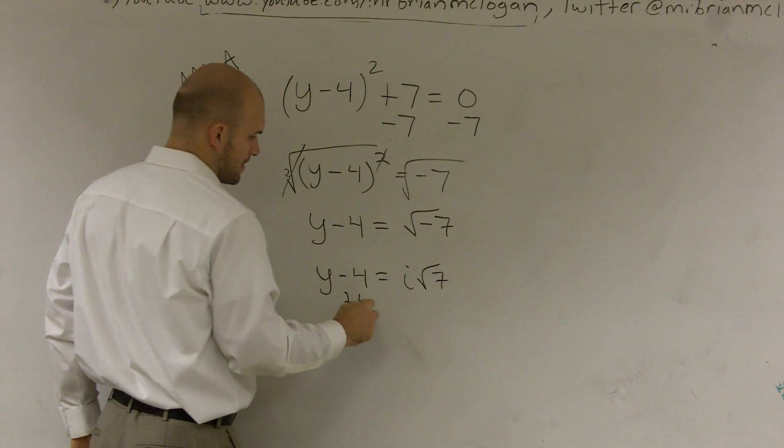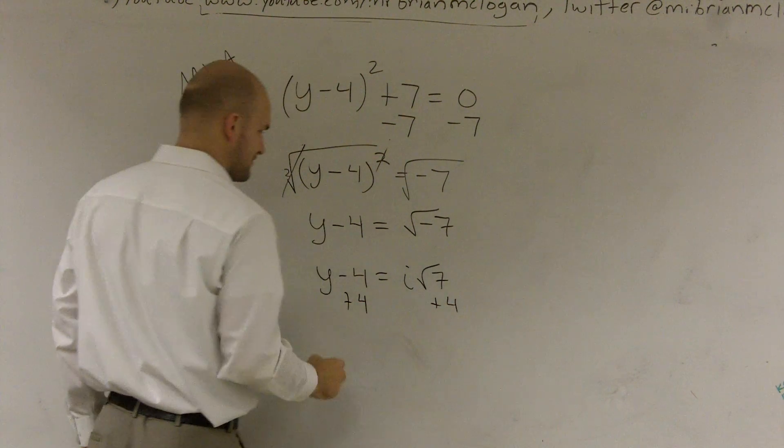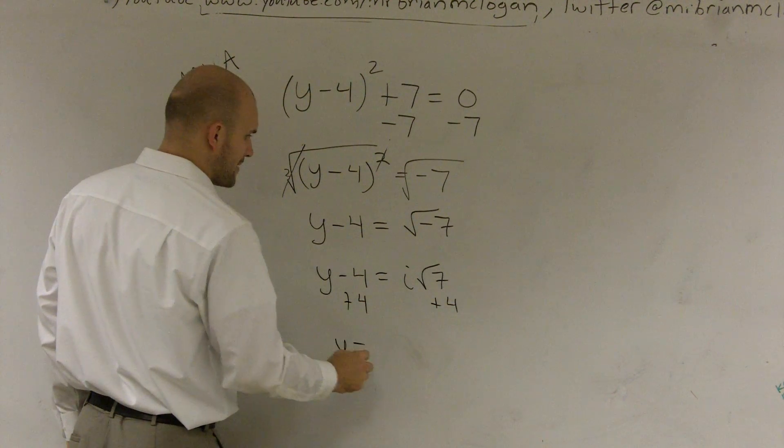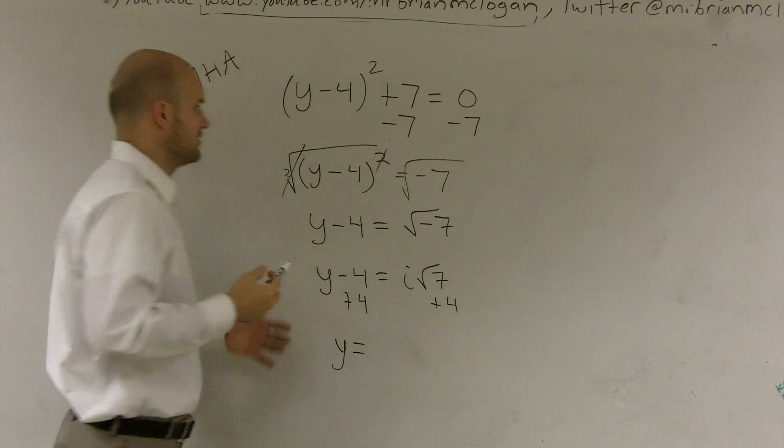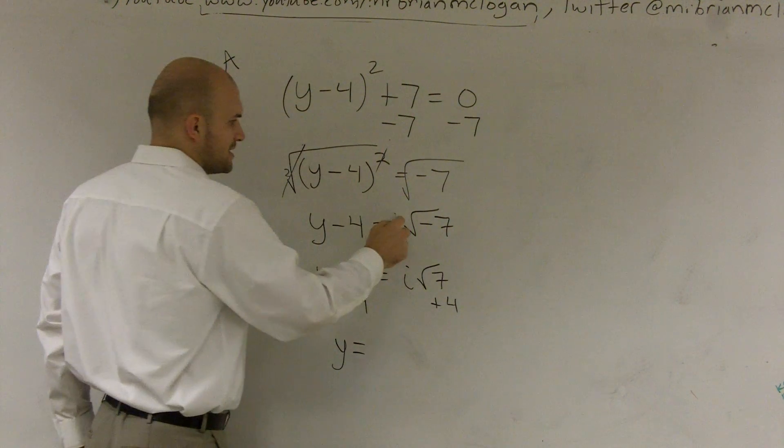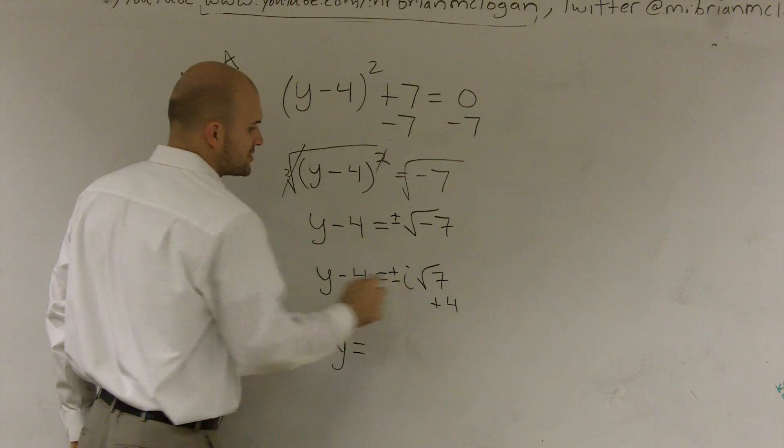Here, then I can just add my 4. So therefore, my final answer by using the square root property. Oh, I forgot one last thing. Whenever you take the square root of a side, this is going to be your plus and minus. Please make sure you guys remember that.